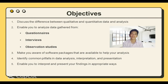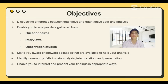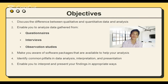First and foremost, let us define our objectives for this topic. Number one, we discuss the difference between qualitative and quantitative data and analysis. Number two, enables you to analyze data gathered from sources such as questionnaires, interviews, and observation studies. Number three is to make you aware of software packages that are available to help your analysis. Number four is to identify common pitfalls in data analysis, interpretation, and presentation.